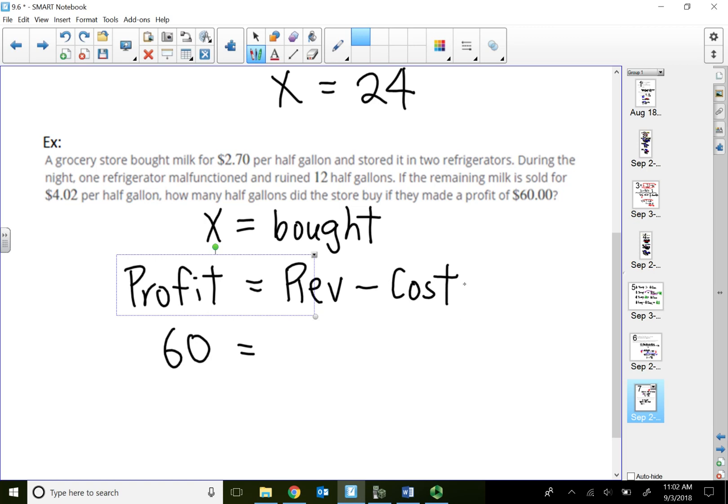What did it cost the store to buy all these milk? It cost the store $2.70 to buy x number of milk. But we did not sell all these milk. Because during the night, after the refrigerator malfunctioned, I lost 12 of those. So total number bought minus the 12 that I lost times by what I'm selling for. So this is so many gallons that I'm able to sell. When I'm selling the remaining milk, I'm selling at $4.02. So this problem, the revenue part is $4.02 times total bought minus the 12 we lost. The revenue minus the cost will equal to my profit.